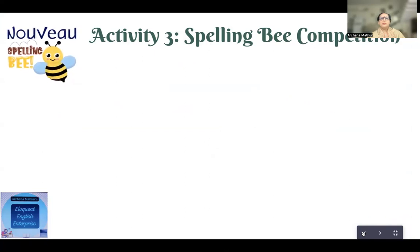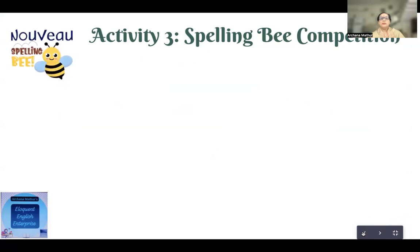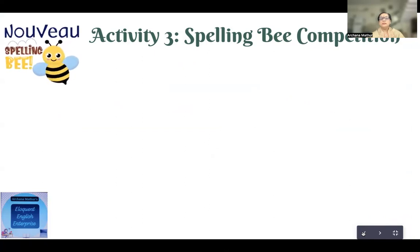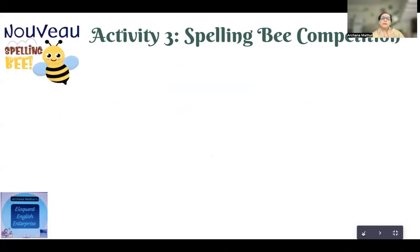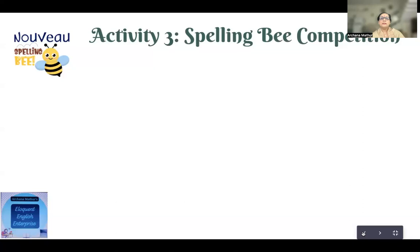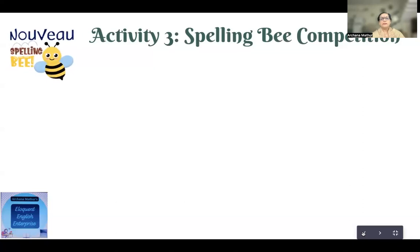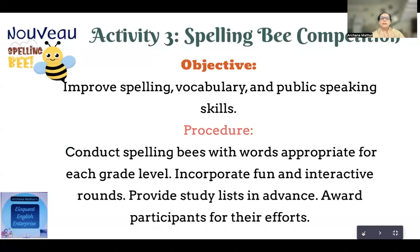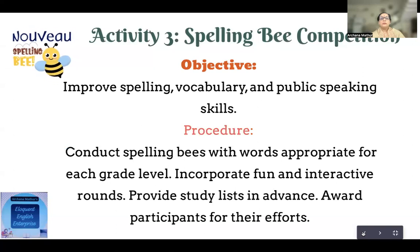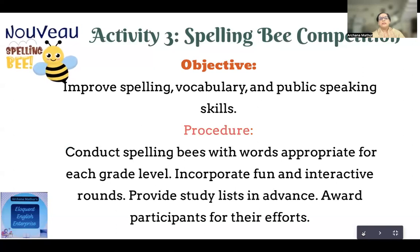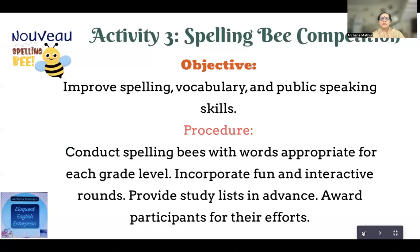The third activity is a spelling bee competition, which improves the spellings of students. Once they become confident with spellings, their vocabulary also increases. The objective is to improve spelling, vocabulary, and public speaking skills. We conduct this competition with words that are appropriate to their age and stage — age-appropriate words.